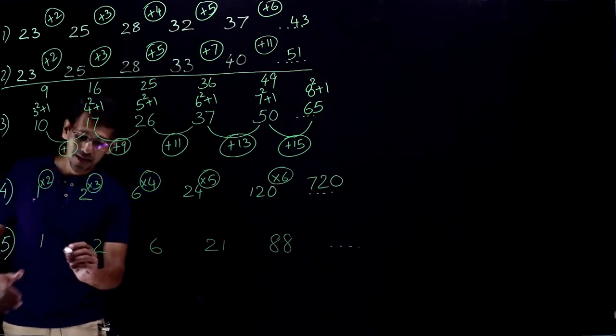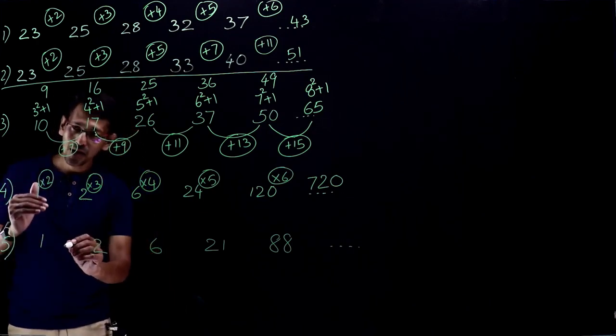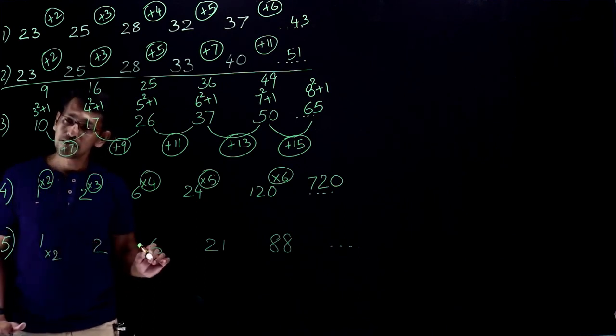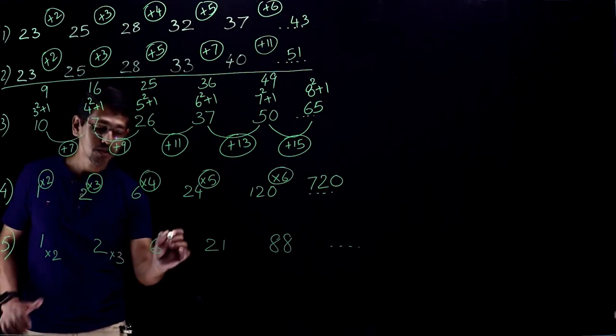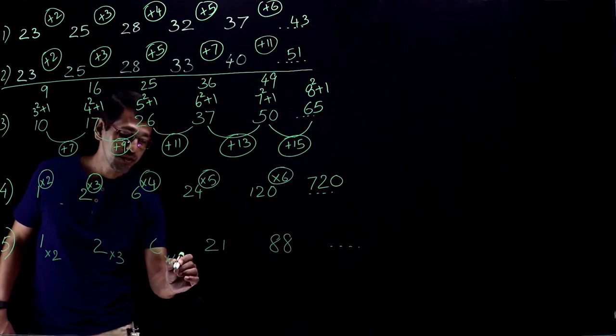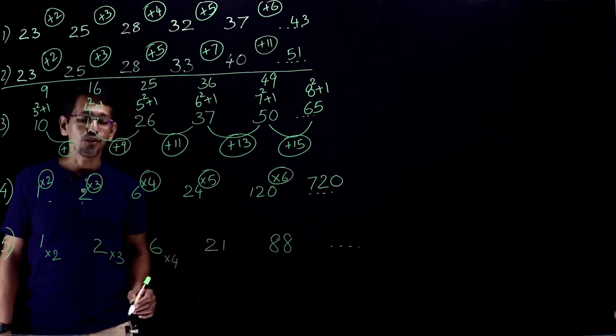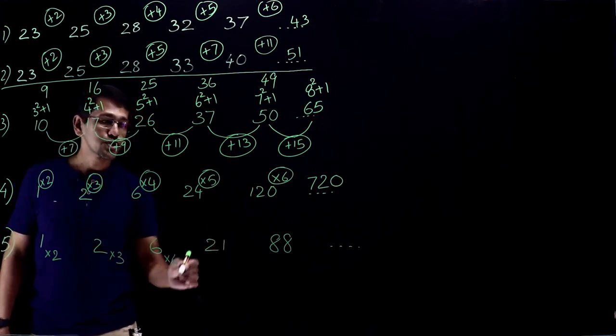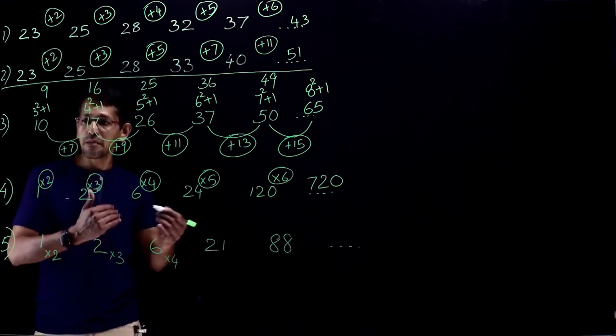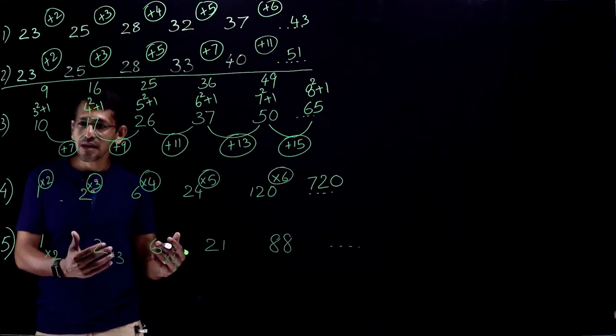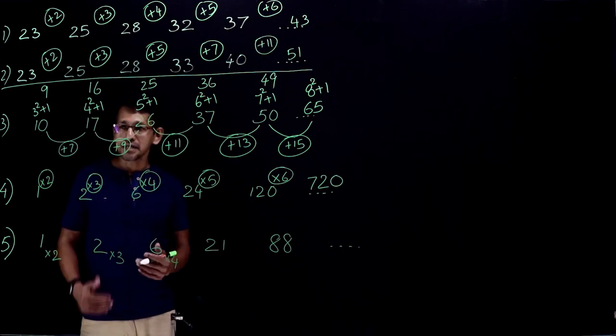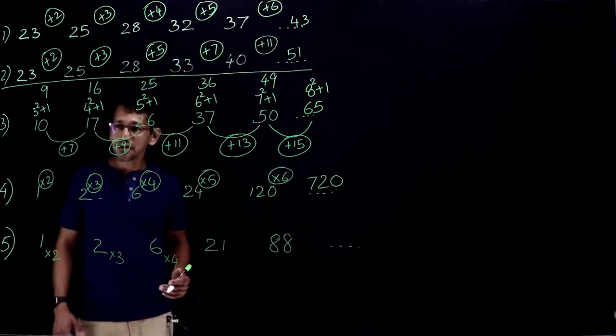So the first thing normally would come to our mind is 1 into 2 is 2. Good. 2 into 3 is 6. Perfectly all right. But next one, 6 into 4 is 24. But what we have given us? 21. Either question is wrong or our method is wrong. Rather than anticipating the question is wrong, probably we look at our method or our pattern.